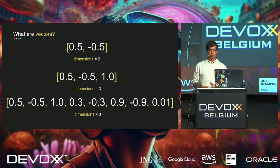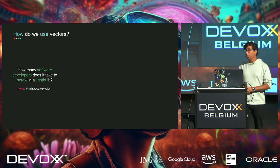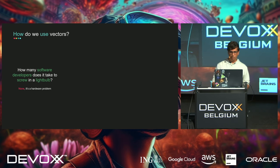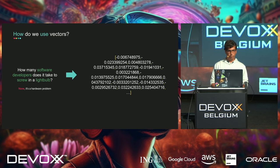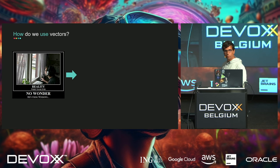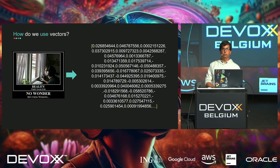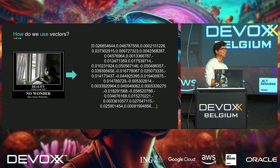So how do we use vectors? Say you have a piece of text — we create a vector representation of that text. Say you have an image — you can do exactly the same thing: create a vector representation of that image. Nowadays they do this with everything: sound, animations, 3D models. They try to vectorize anything and everything. It won't be long before they vectorize reality.